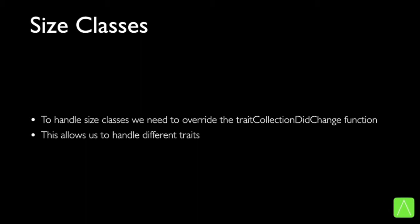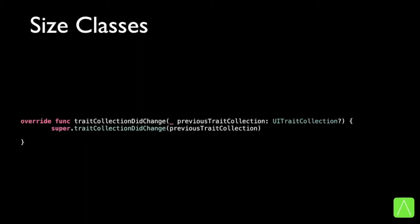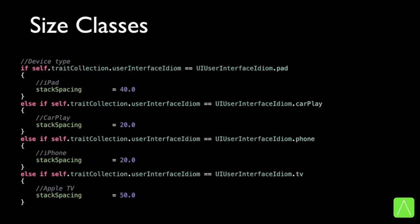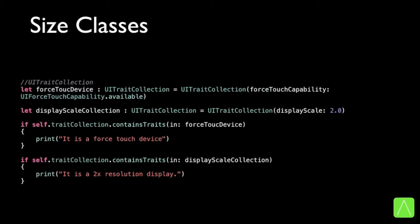The only thing left is the process of handling size classes. To handle size classes, we need to override the trait collection did change function, which allows us to handle different traits. Simply override the function and write code for checking the different size classes available — for example, whether it's compact or regular in the vertical or horizontal direction, with all combinations you need. The variation could be based on device type too: is it an iPad, a phone, an Apple TV, or a CarPlay device? We can even add variations based on device features, such as whether it has force touch capability or what display resolution size is available. Handling size classes is fairly simple and straightforward.